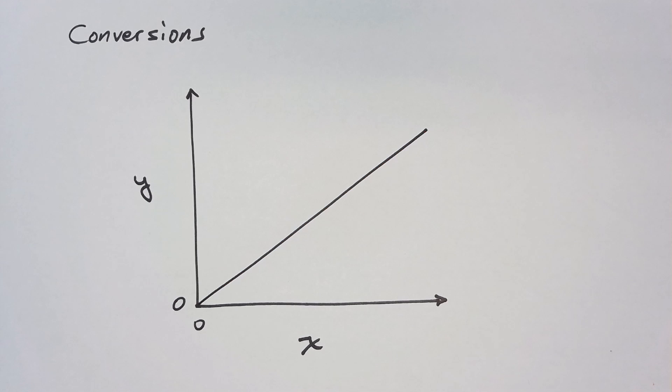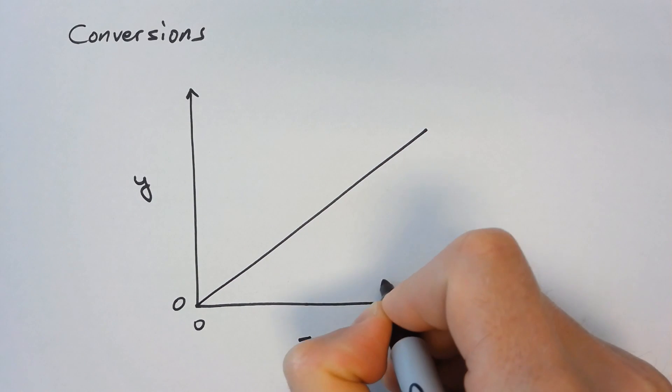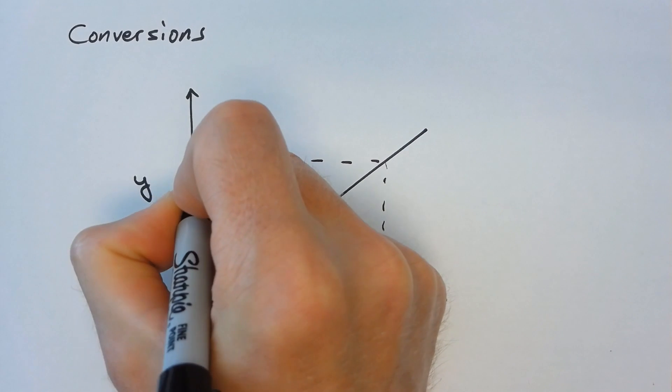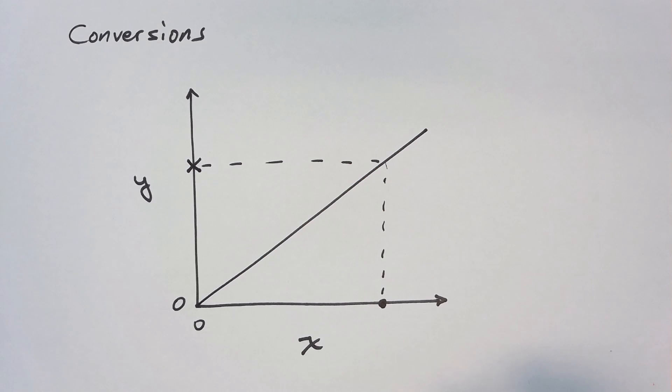A line intersecting the origin of the graph represents the relationship between the two units. Graphically, we can convert between x and y units by starting with an x value, tracing a vertical line until it intersects the line, then tracing a horizontal line to the y-axis to find the equivalent y value.